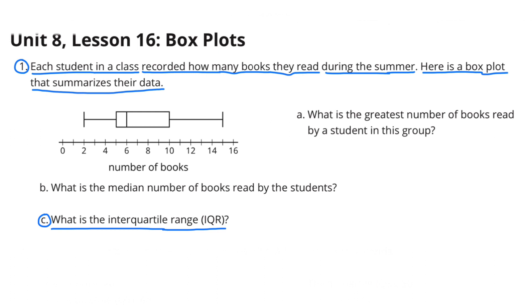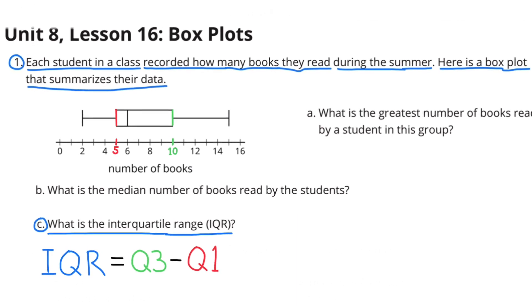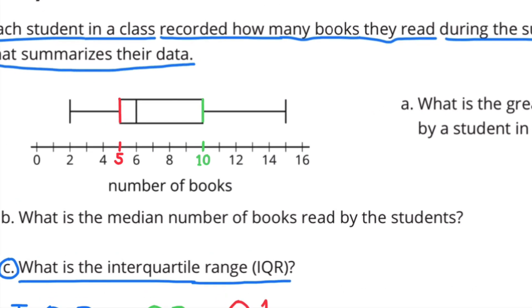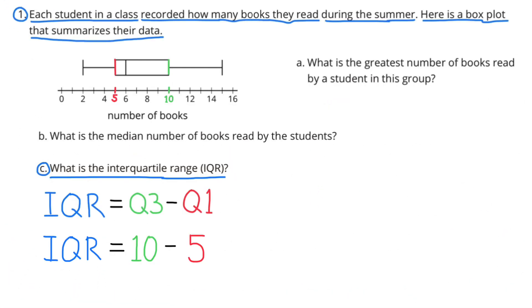Part C: What is the interquartile range, or the IQR? Remember, the IQR is the difference between quartile 3 and quartile 1. The value for quartile 3 is 10, and the value for quartile 1 is 5. The IQR for this box plot would be 10 minus 5, or 5.